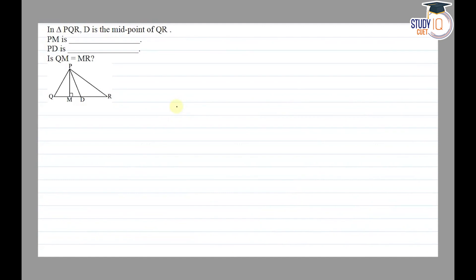Hello everyone, this question appears in Class 7th NCERT chapter on triangles and its properties. This is the first question of exercise 6.1. The question says that in triangle PQR, D is the midpoint of QR.